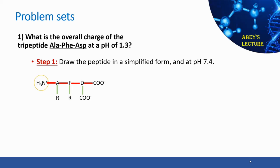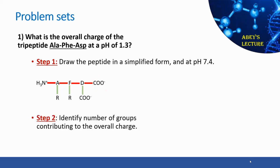Here is the simplified representation of the peptide. The N-terminus is positively charged at pH 7.4 because it is protonated. This is followed by alanine with its side chain R, phenylalanine with its side chain R, and aspartic acid whose side chain contains a carboxyl functional group. The C-terminus is negatively charged at pH 7.4 because it is deprotonated. The N-terminus and C-terminus contribute to the overall charge, while alanine and phenylalanine do not have ionizable side chains and therefore do not contribute. Aspartic acid has an ionizable functional group, so it does contribute.